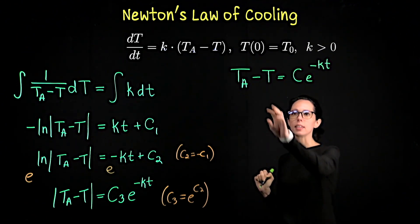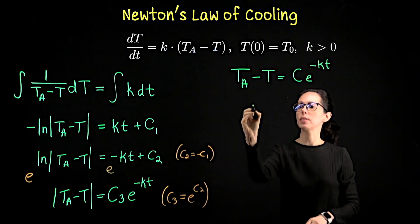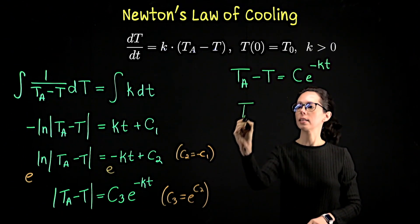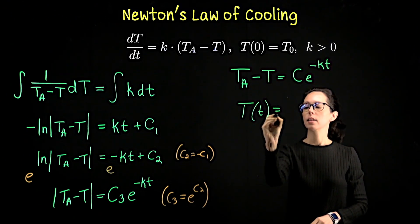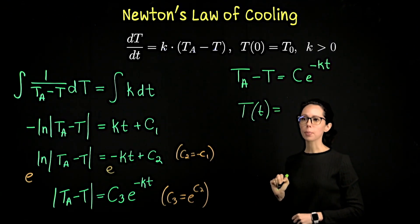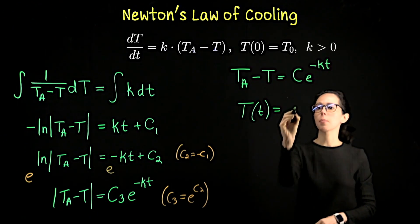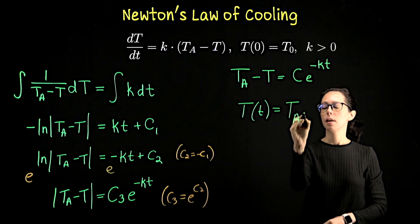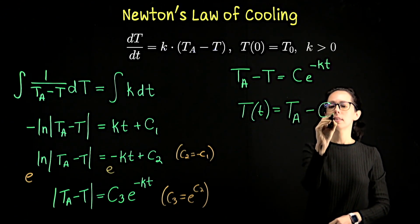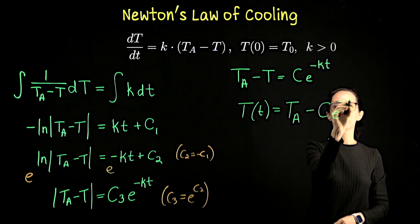Once we've dropped the absolute value and absorbed the sign into a single constant C, we have T_a − T = C·e^(−kt). Isolating T on the left-hand side, the temperature over time, capital T, equals the ambient temperature minus C·e^(−kt).